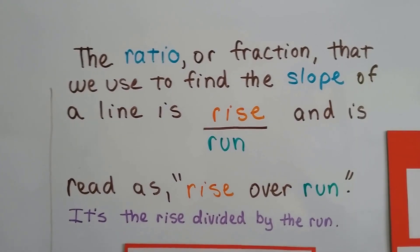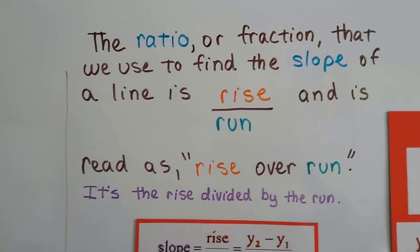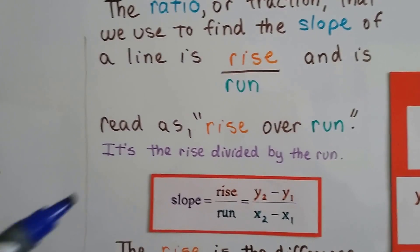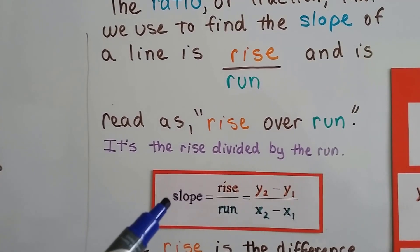And remember, fractions are little division problems? We read it as rise over run. It's the rise divided by the run. So here's the formula we would use to find the slope. It's the rise over the run.